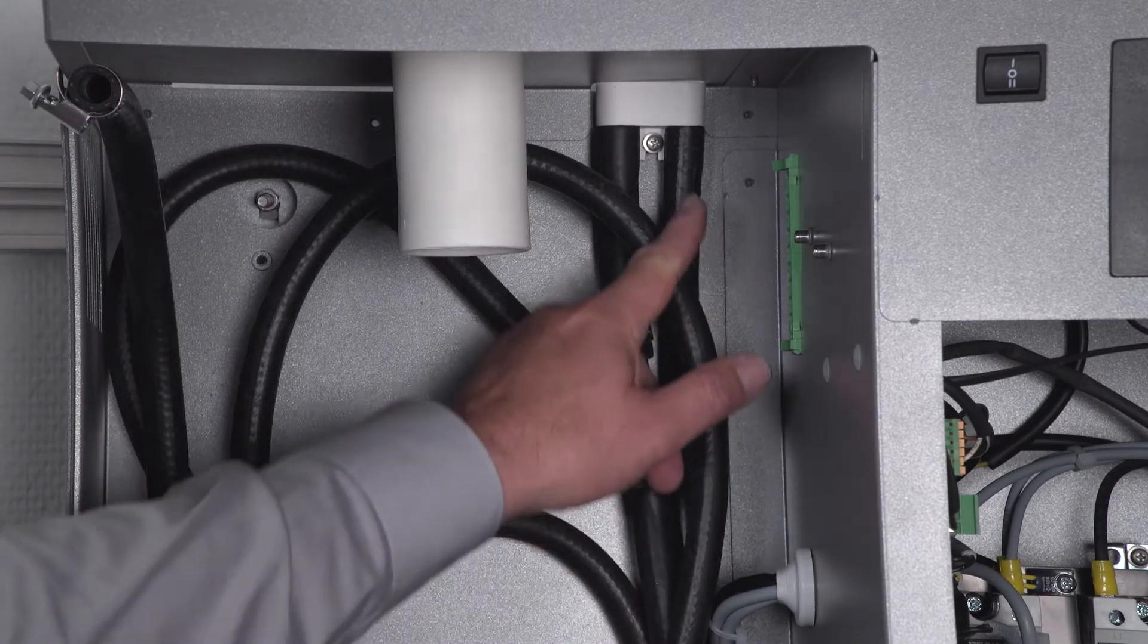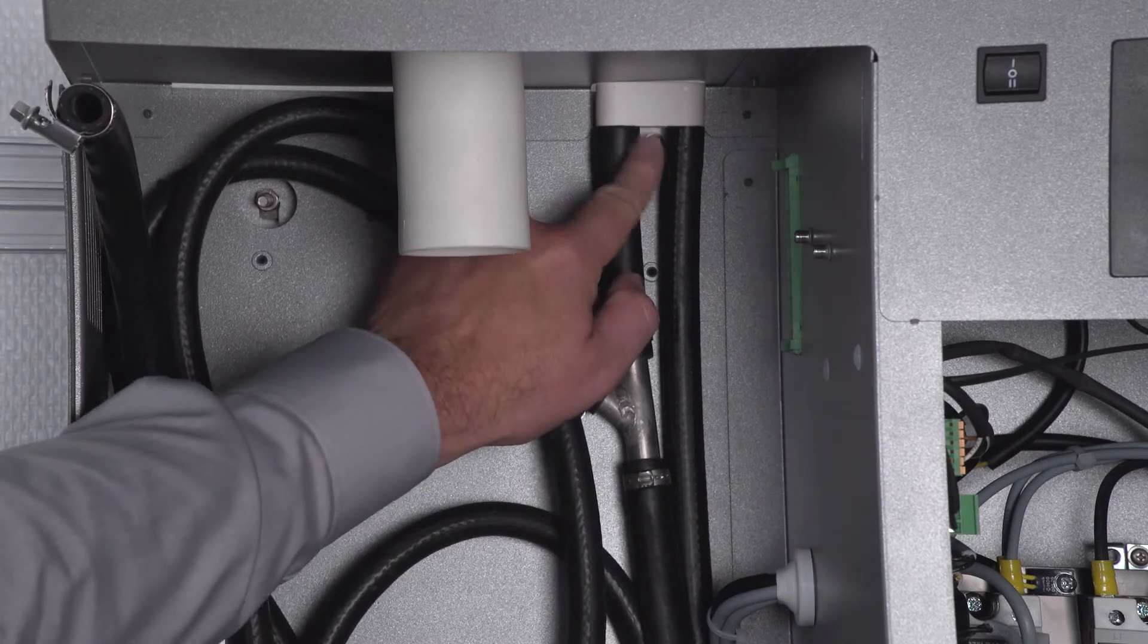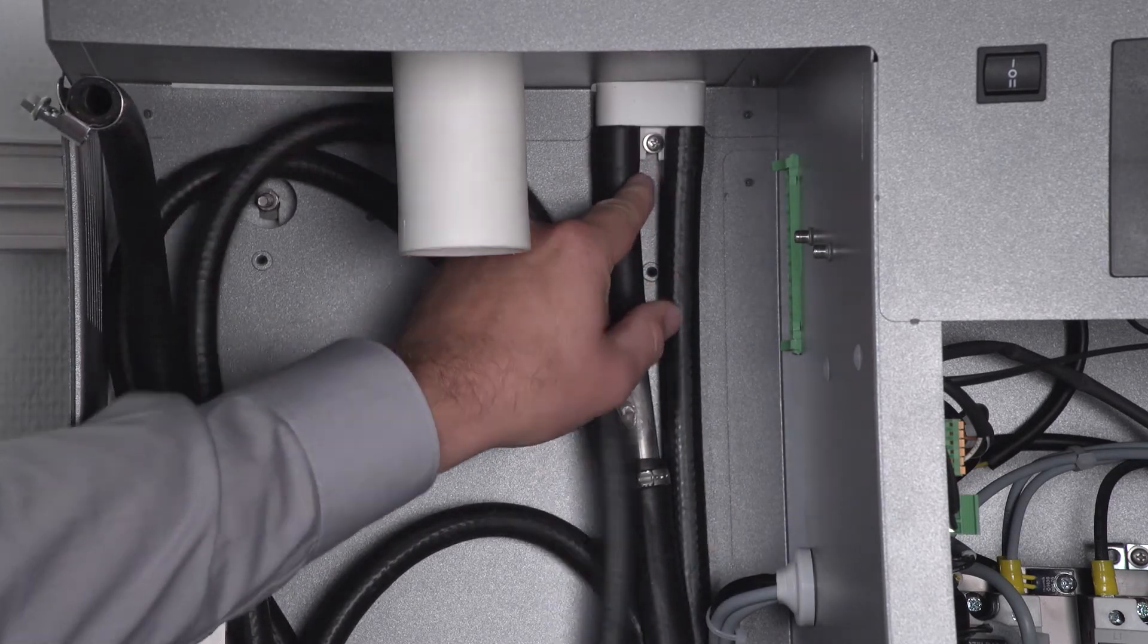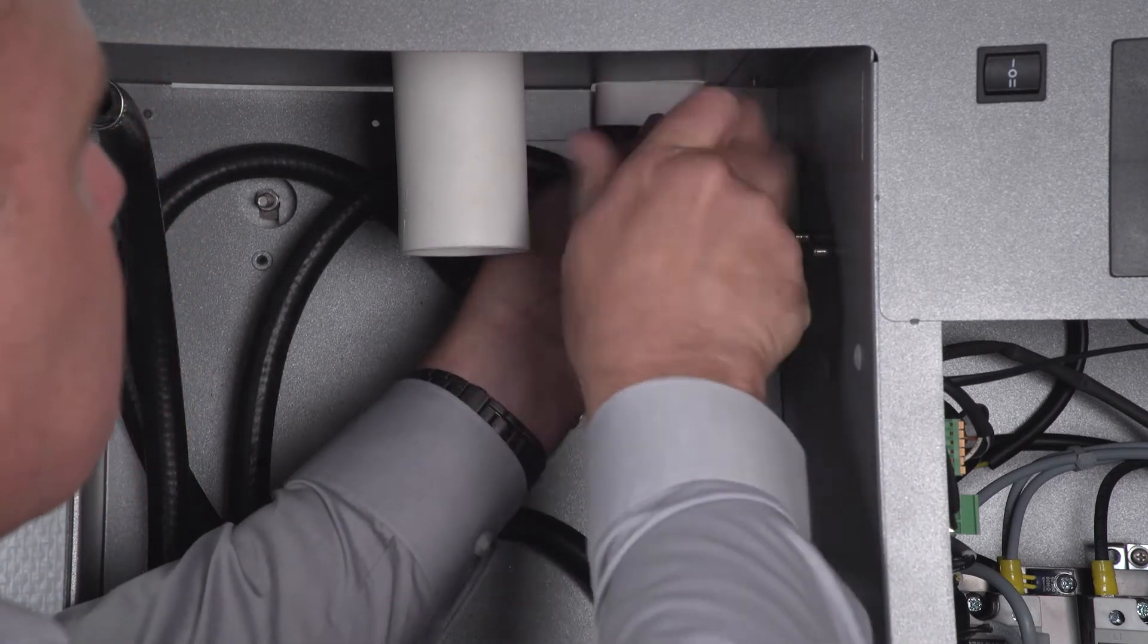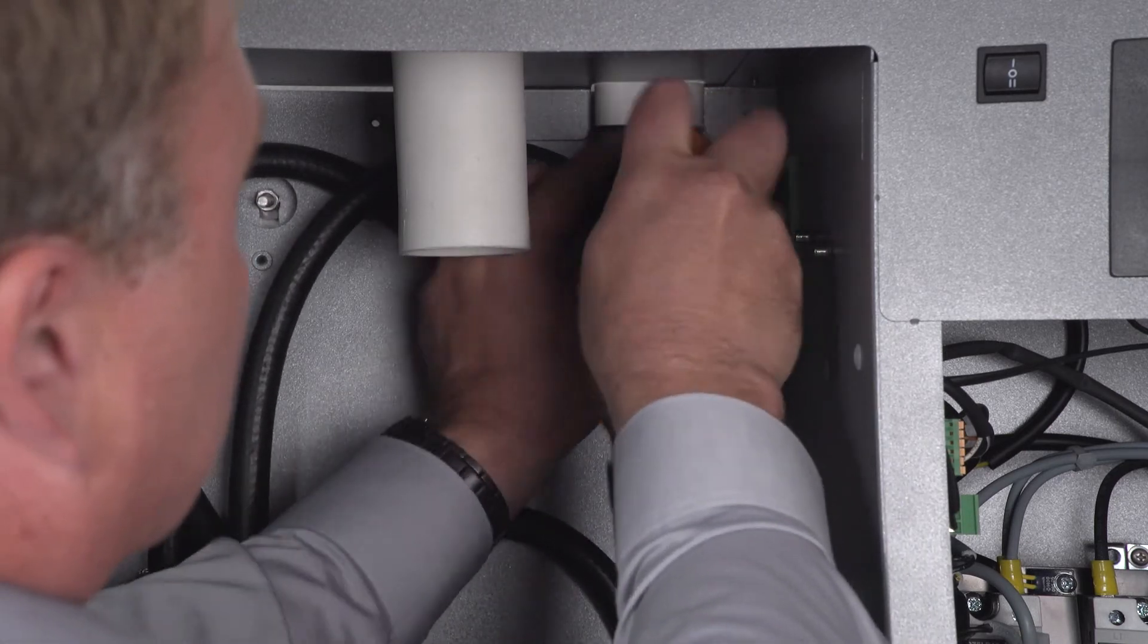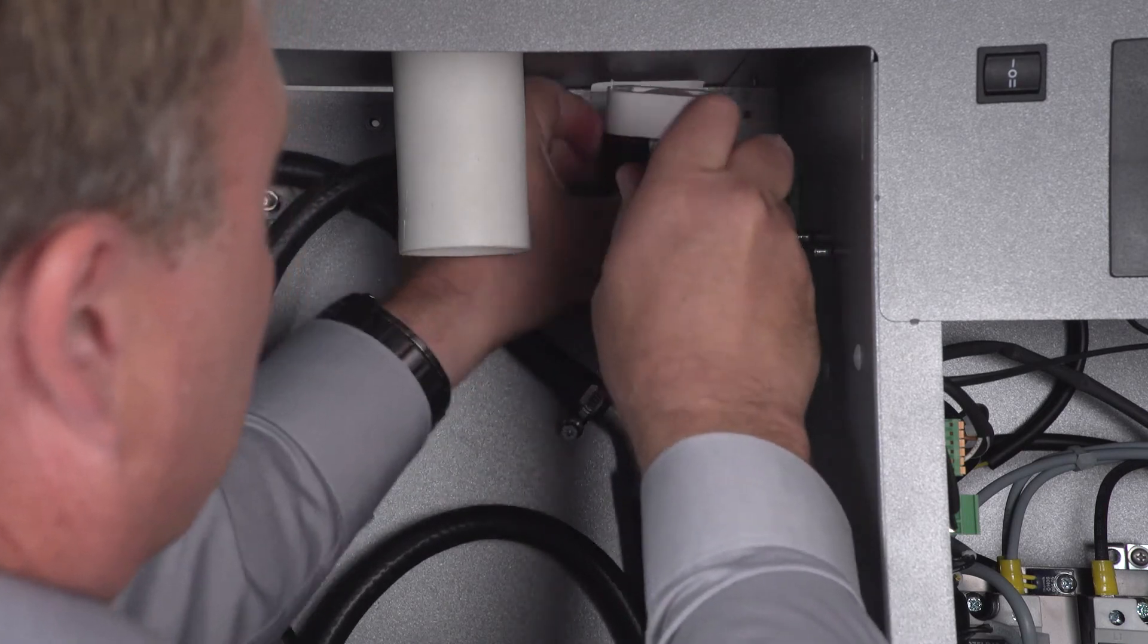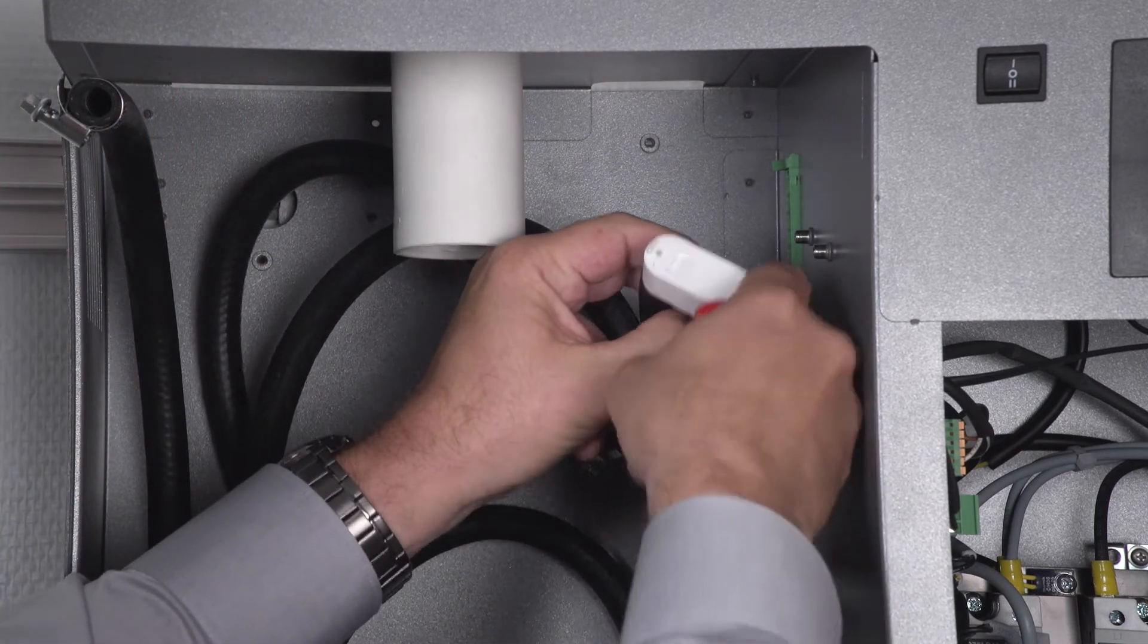A further maintenance point is the inspection of the pipe bend. It is located here. To dismantle it, I simply unscrew the screw here and pull the pipe bend over to me.